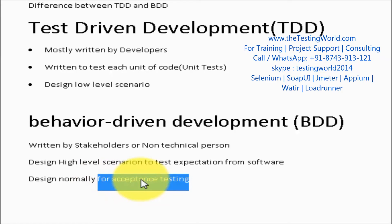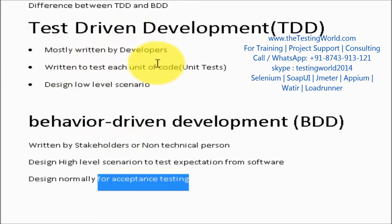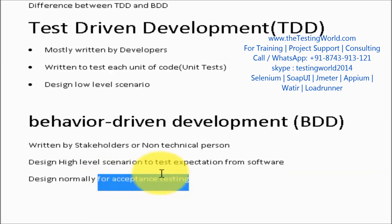Both approaches — TDD and BDD — are similar in that test cases are designed first and then development is going on, but there are a few differences. In TDD, developers write the test cases, while in BDD, stakeholders write them. In TDD, unit test cases are written for each function or class, whereas in BDD, high-level test cases are written for acceptance testing. That's a very common concept, and it's the main reason we go for the BDD approach.